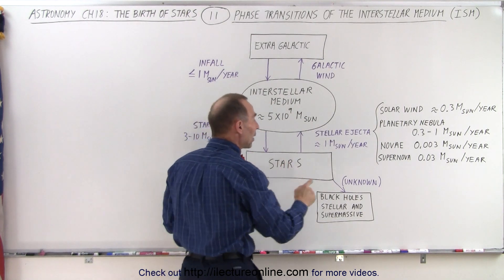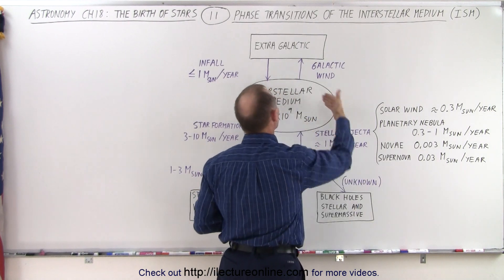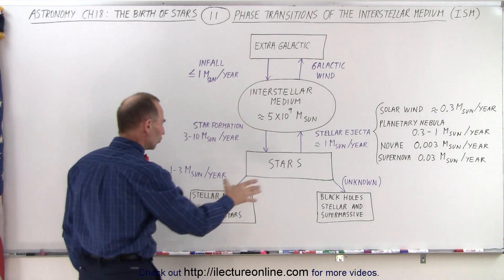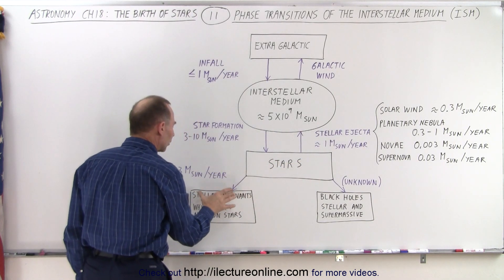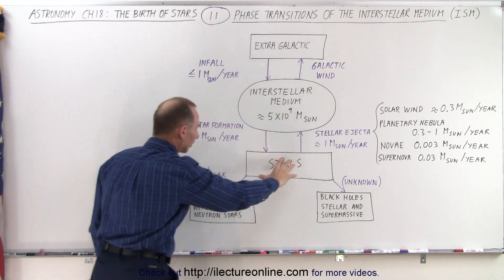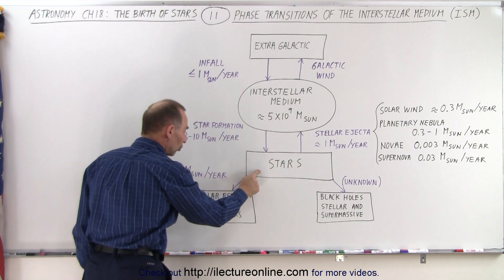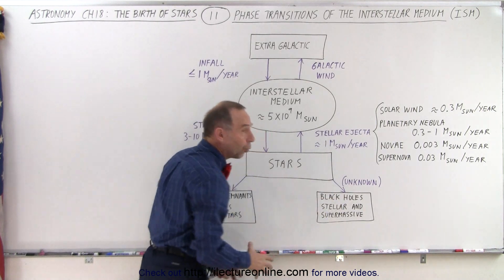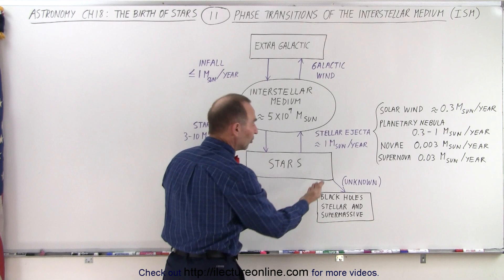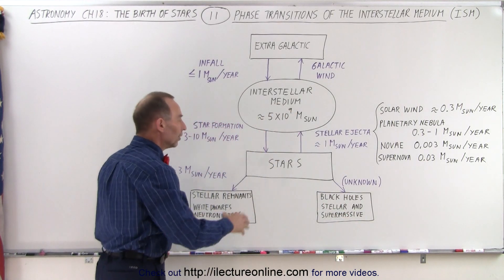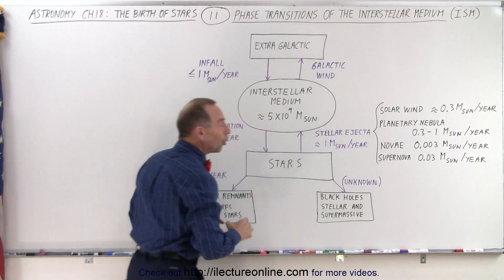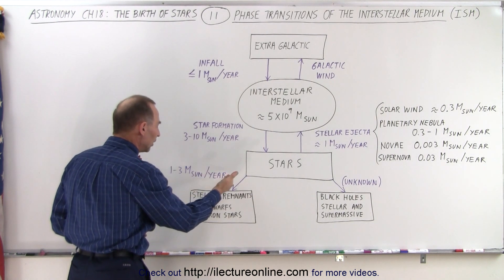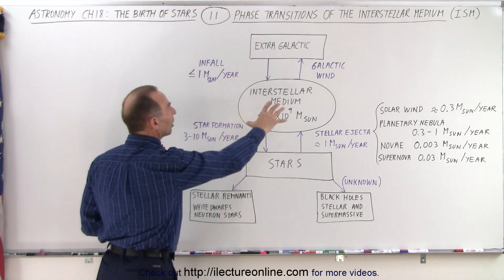Roughly about one times the mass of the sun is injected back into the interstellar medium from stars, primarily when the stars die. At the same time, stars turn material into stellar remnants — material that is no longer part of the interstellar medium and can no longer be used for stars. The vast majority of stars will turn into white dwarfs, and some will turn into neutron stars or even black holes. About one to three times the mass of the sun on average per year is turned into white dwarfs and neutron stars, never to be used again to make new stars.